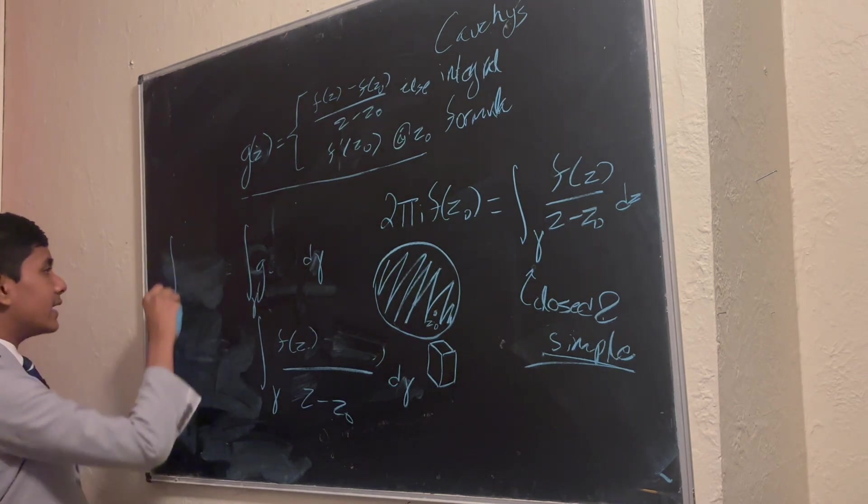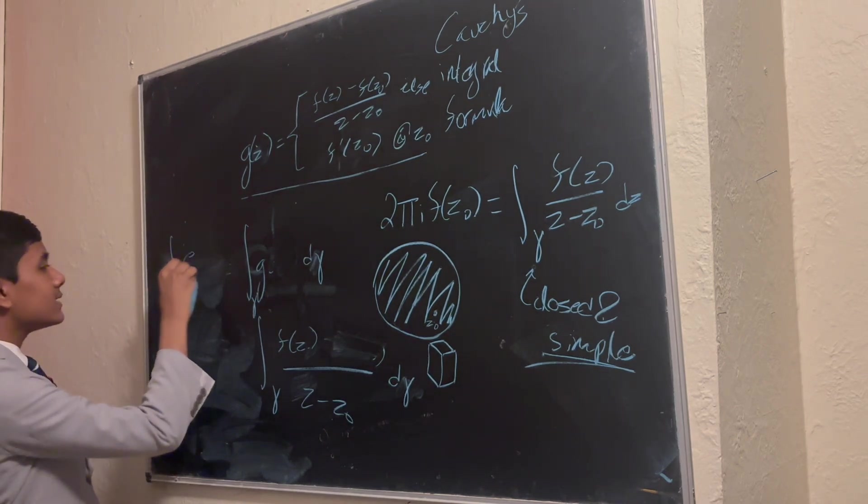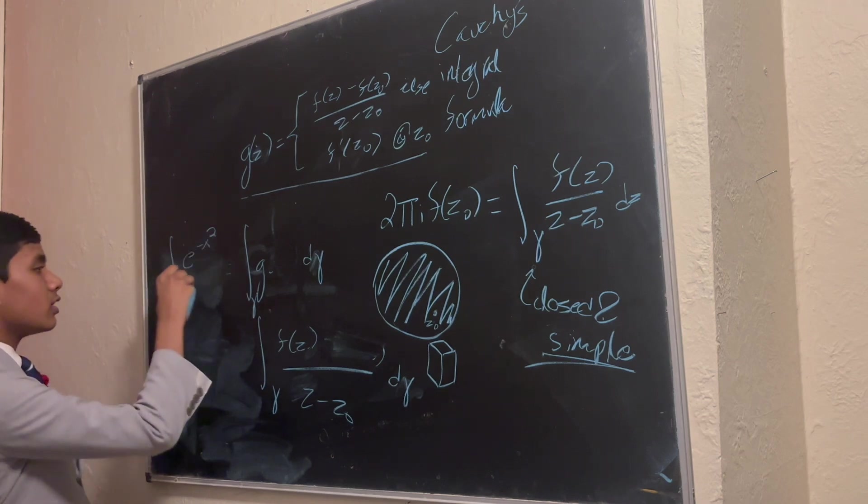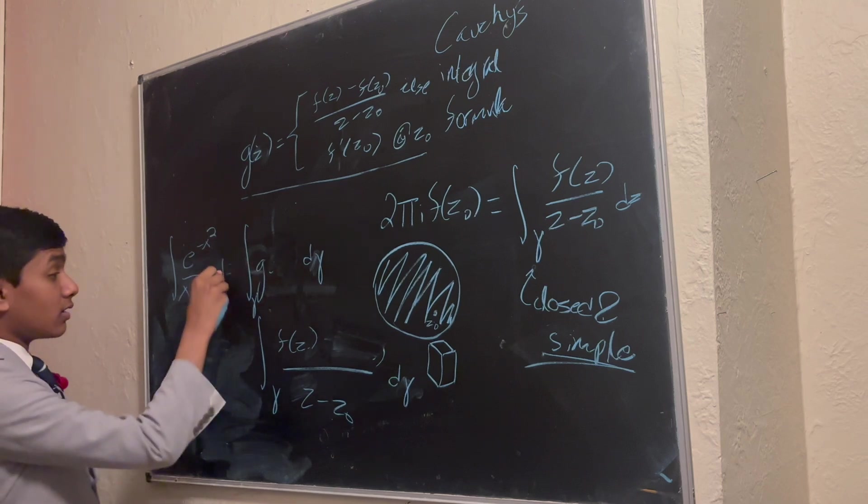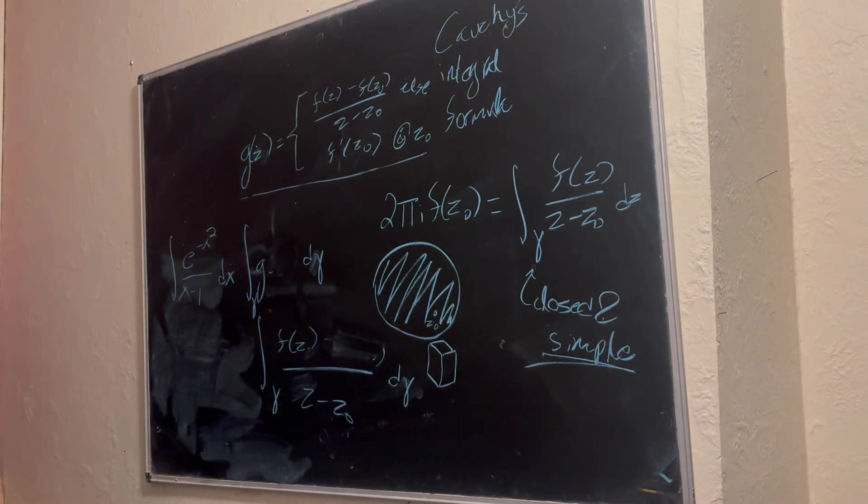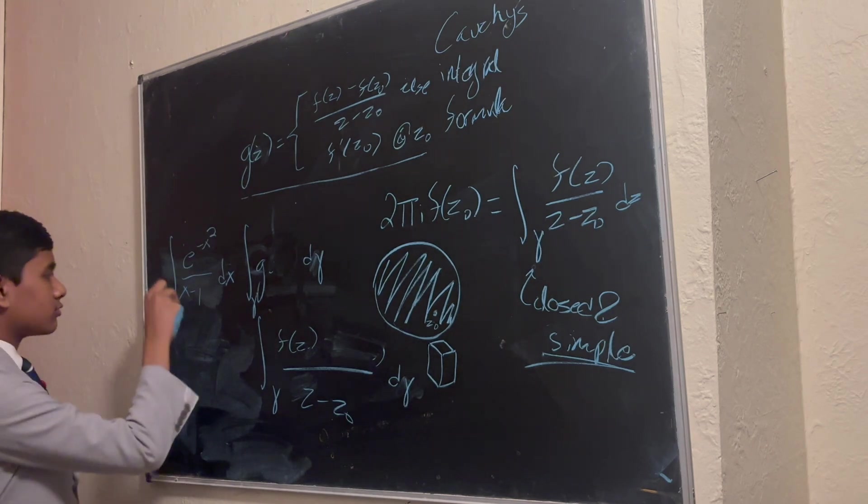First of all, let's try to integrate, I don't know, e to the minus x squared over x minus 1 dx over the real line. Let's say from, I don't know, 0 to 1.